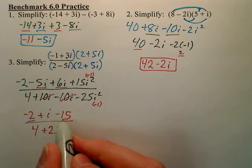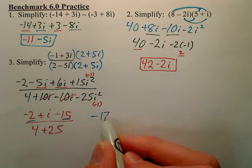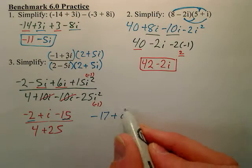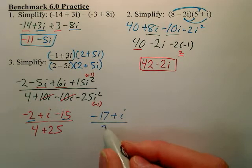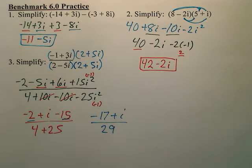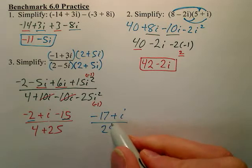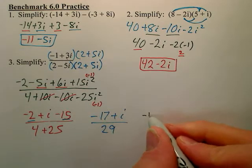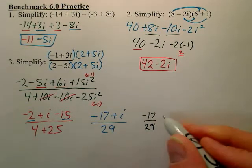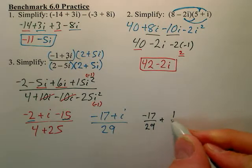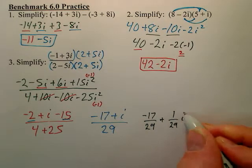And then combine these. Looks like we have negative 17 plus i over 29. And I do not like the way this is written. This is not a proper answer. I'm going to simplify it to be negative 17 over 29, plus 1 over 29i.